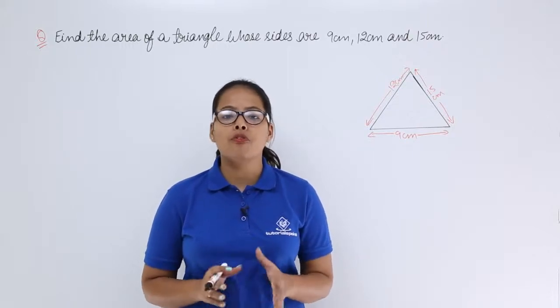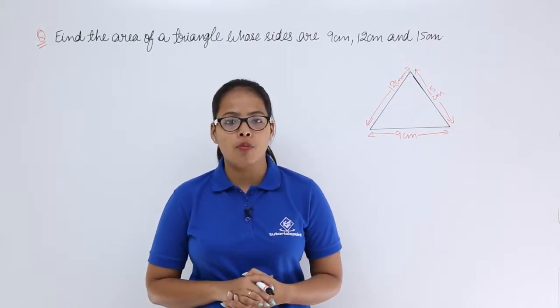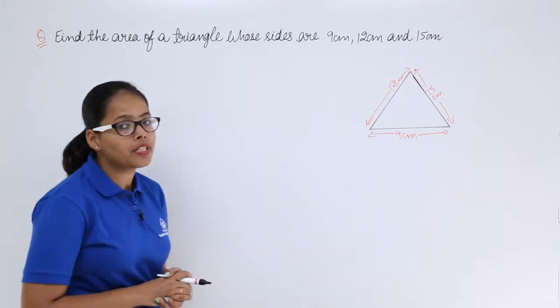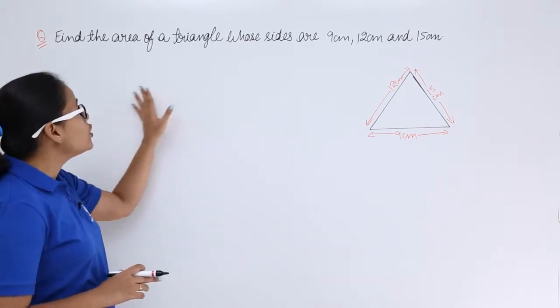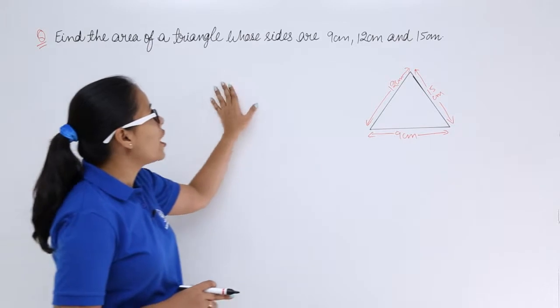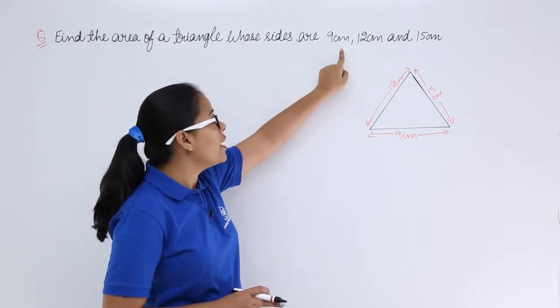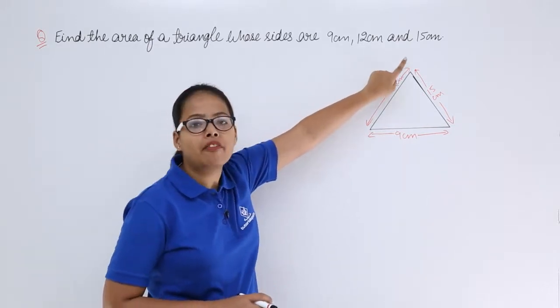Hello guys, let's take this problem from R.D. Sharma on Heron's formula. The problem says you need to find the area of a triangle whose sides are 9 cm, 12 cm and 15 cm.